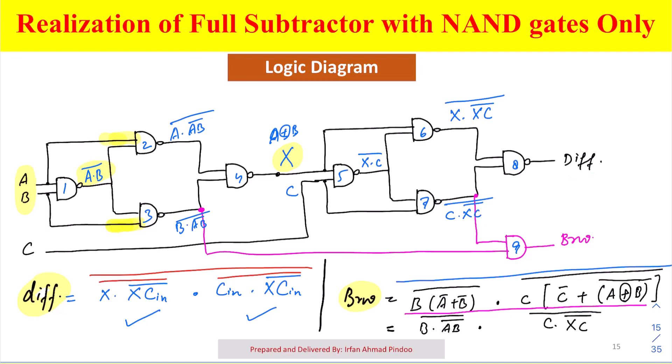So what about the borrow? Borrow equation, you can see, again there are two terms. One of the terms you can see here is B dot AB bar whole bar, and if you realize this term, let us call it as T1, is already available here.